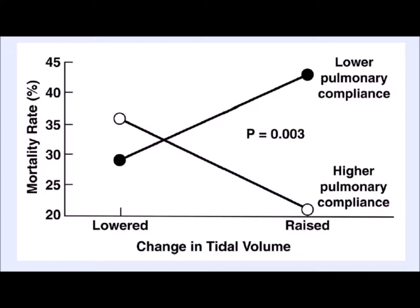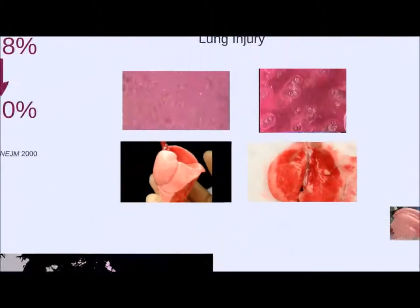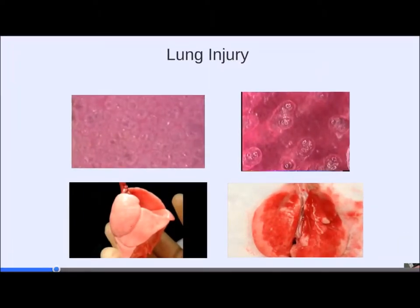Amato's group reanalyzed the ARDSnet data and showed that driving pressure — the change in pressure — is more predictive of outcomes than tidal volume alone. Since driving pressure equals change in pressure over change in volume, it is essentially equivalent to compliance. This is now a well-known entity. Before going further, it's important to understand what lung injury is, because if we understand it we can decide how best to treat or prevent it, thinking about both the lung and its subunits: the alveoli and alveolar ducts.